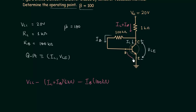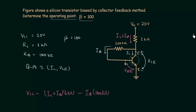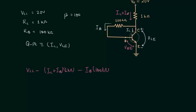Drop across this resistance, minus VBE, equals zero. VBE is equal to 0.7 volts because in the problem it is already mentioned that we are using a silicon transistor. And IC is equal to beta times IB.